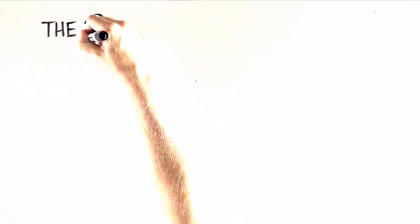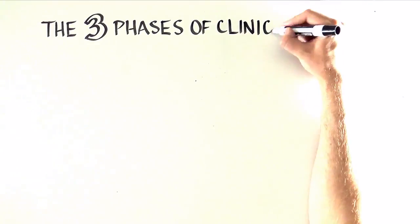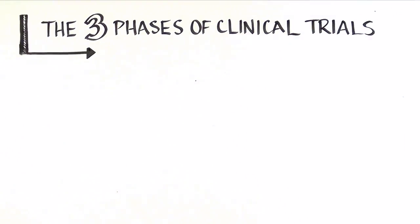Before a vaccine is licensed by the U.S. Food and Drug Administration, it usually goes through three phases of clinical trials, each of which has a specific purpose.